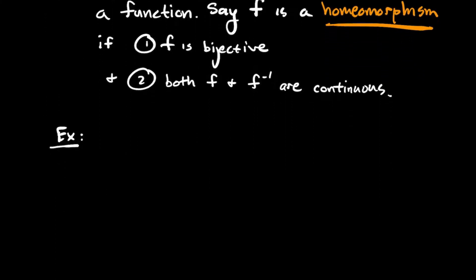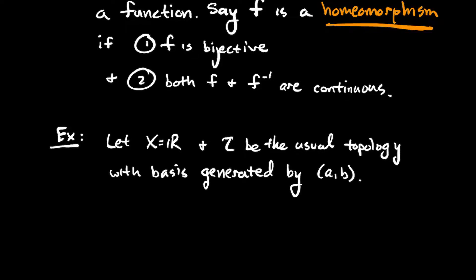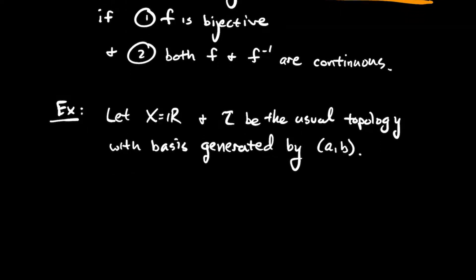So let's look at an example of a homeomorphism. Let's let X be the real line and let T be the usual topology on the real line. And so what I mean by that is the open sets are generated by our usual intervals from A to B without the endpoints included. So I mean that all the things that we'll consider open on the real line are going to be unions and intersections of these kind of nice intervals from A to B, not including the endpoints.